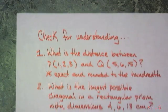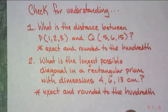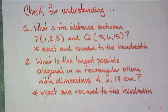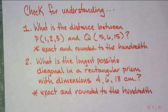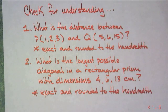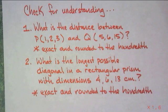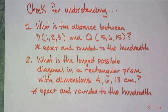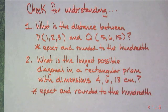Here are some questions for you to ponder. What is the distance between point P at (1, 2, 3) and Q at (5, 6, 15)? Write it as exact and round it to the hundredth — two different answers; simplify the exact answer. Number two: the longest possible diagonal in a rectangular prism with dimensions 4, 6, 13. Again, exact, simplified, and rounded to the hundredth.